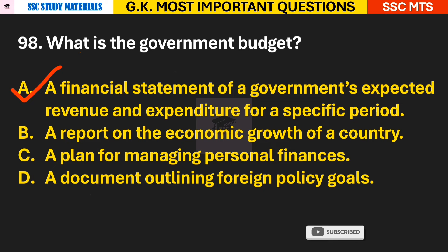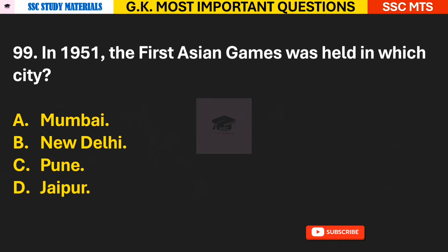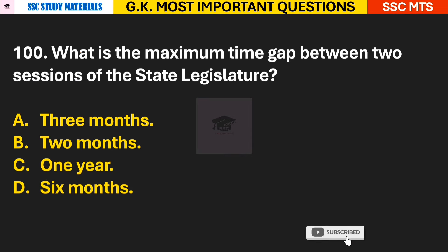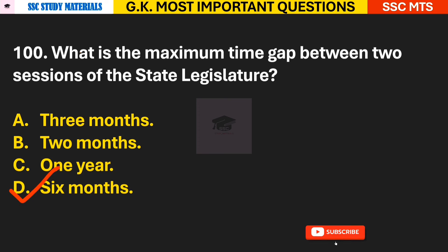Question 98: What is the government budget? Answer A — the government budget is a financial statement of a government's expected revenue and expenditure for a specific period. Question 99: In 1951, the first Asian Games was held in which city? Answer B — New Delhi. Question 100: What is the maximum time gap between two sessions of the state legislature? Answer D — six months.